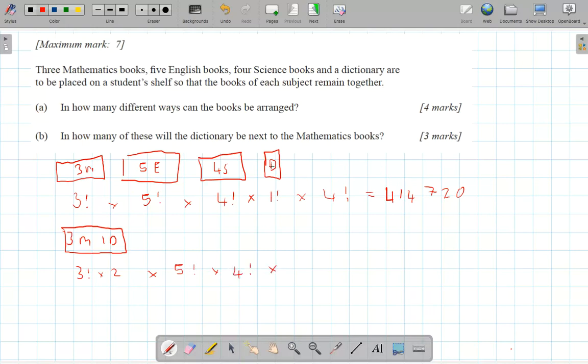And this time, as that one is in amongst there, I've got one, two, three blocks. I've got the English block and the science block, but no dictionary. So I've only got three different blocks.